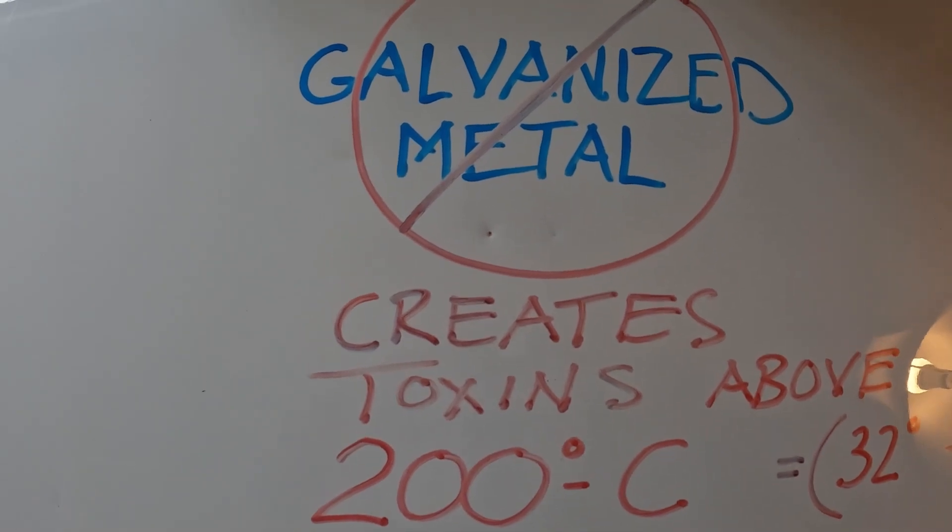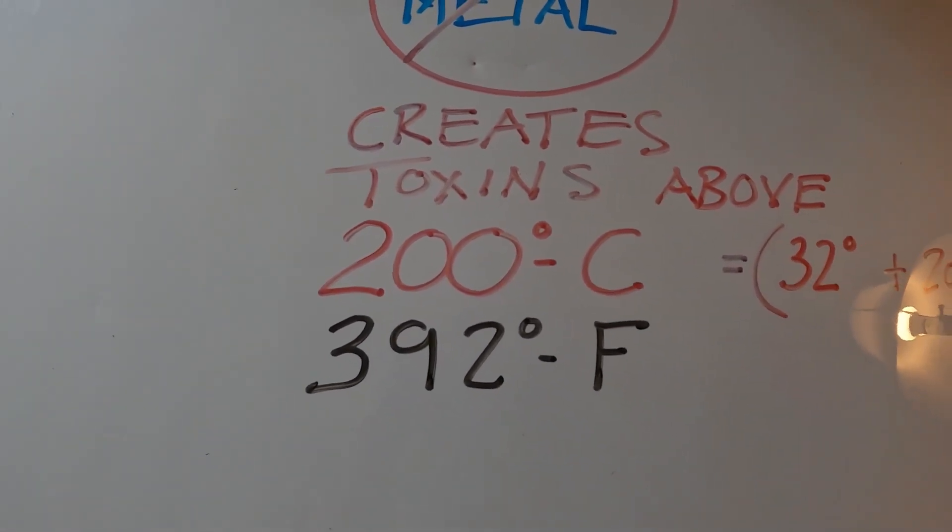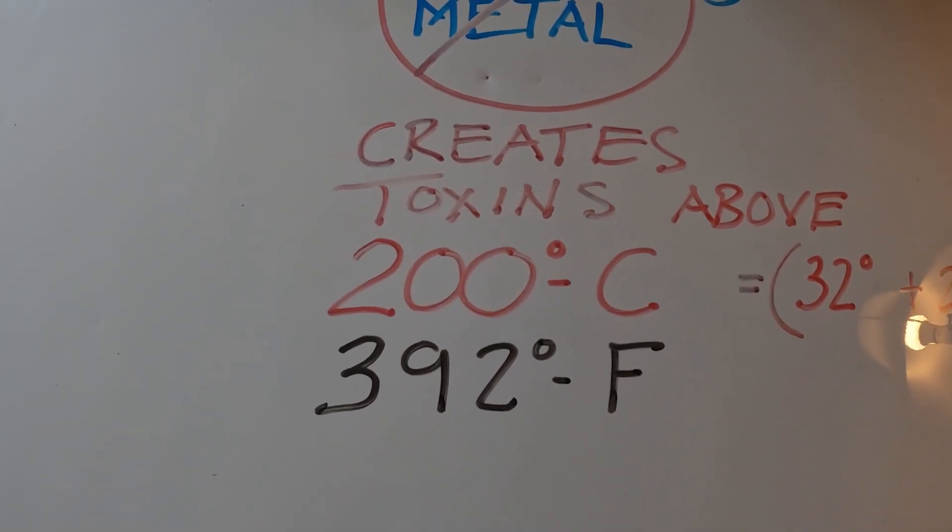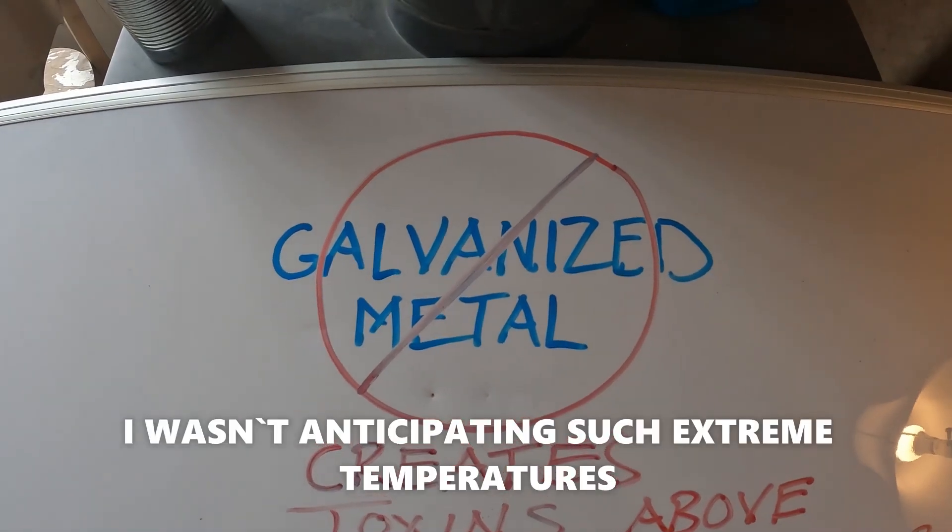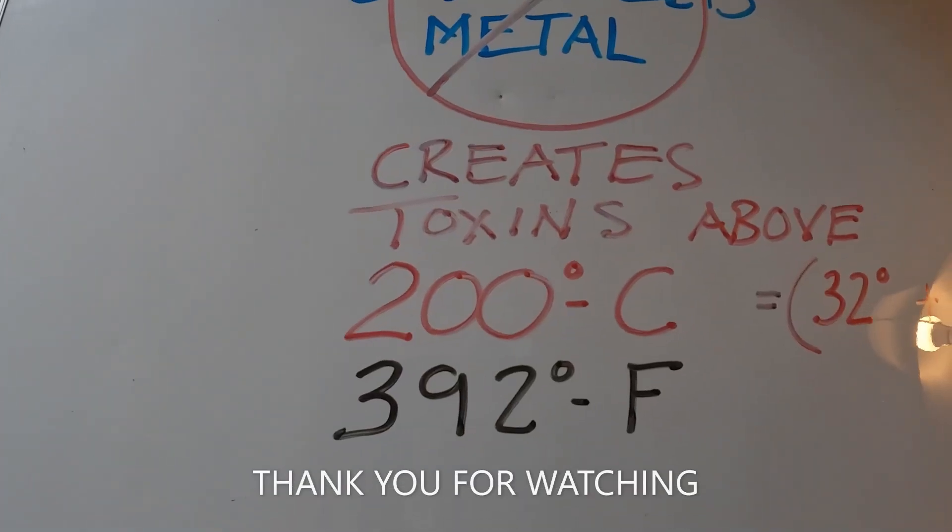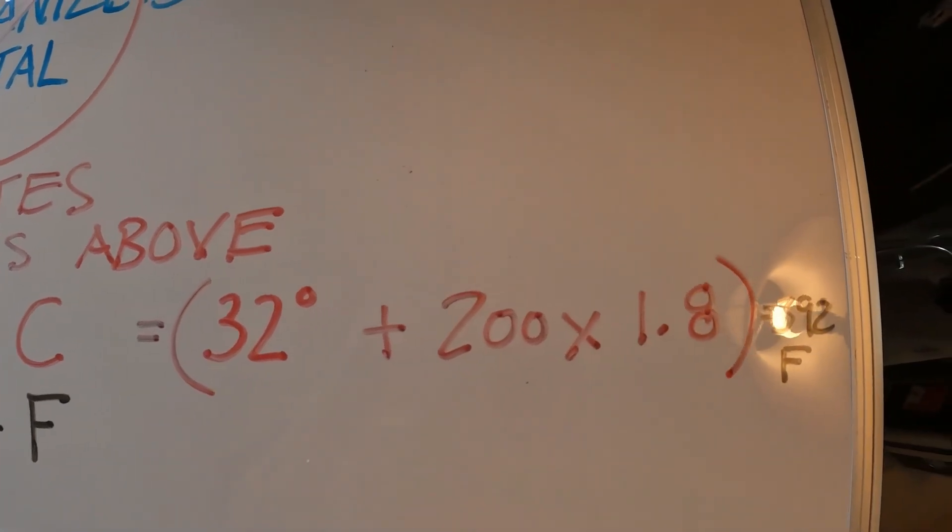Metals that have zinc or brass create toxins above 200 degrees Celsius, which is 392 degrees Fahrenheit. One of the guys commented about the galvanized metal, and I should have known better. The conversion is: 200 degrees Celsius equals 32 plus 200...